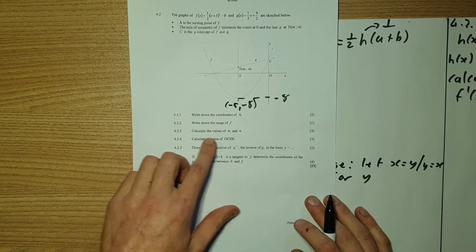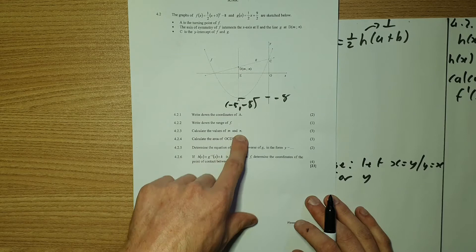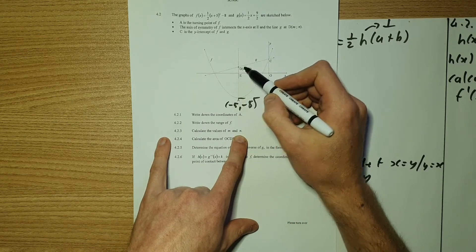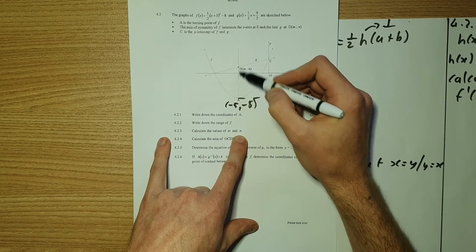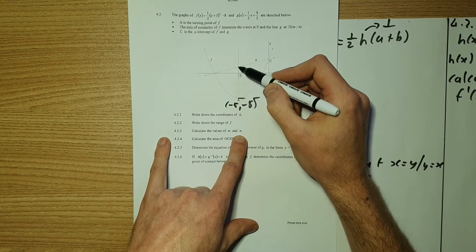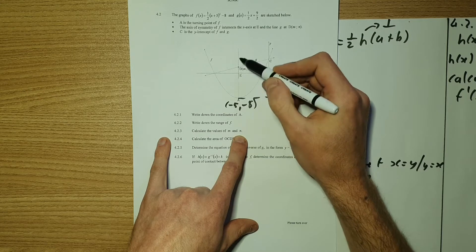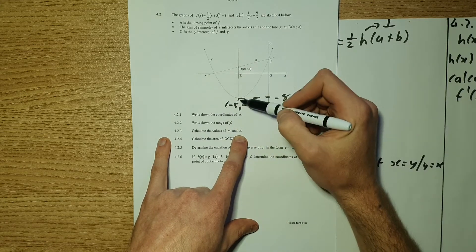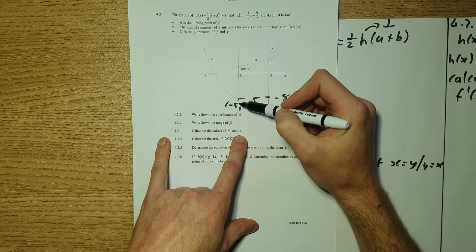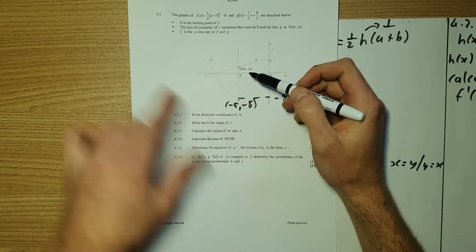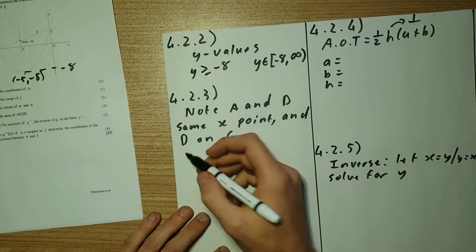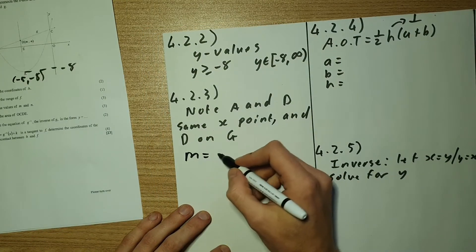Next, we're looking at 4.2.3, which says calculate the values of m and n. Now, m and n are at point d. So now note that because of this line that links a and d, it's perpendicular to my x-axis, d and a will share the same x value. So we can see already that m equals negative 5.